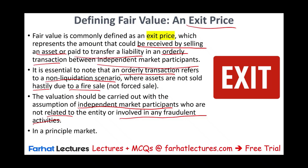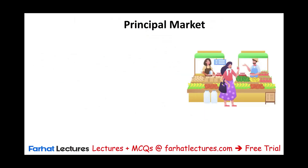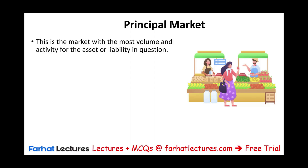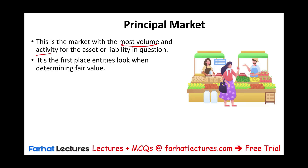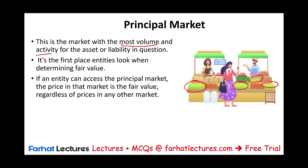We also need a principal market. The principal market is the market with the most volume and activity for the asset or liability in question — the first place entities look when determining fair value. For example, in which market are the most bananas sold? Importantly, the entity must have access to that market — able to buy and sell on it. If the entity can access the principal market, the price in that market is the fair value regardless of any other market's price.